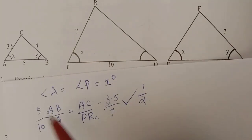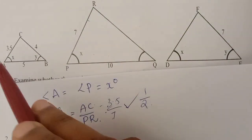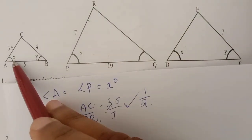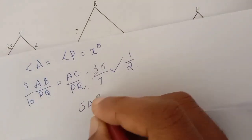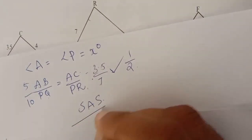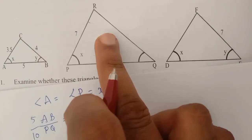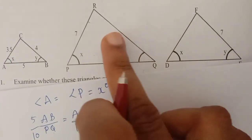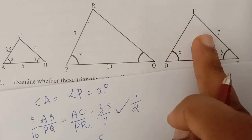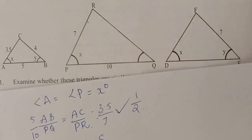The ratio is the same for the two sides. The ratio is the same as S, A, S. So the ratio is the same and the triangles are alike.